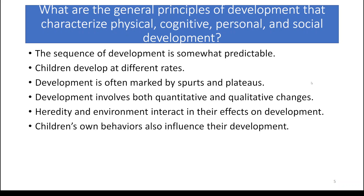Things you need to know about development — human development and learning development in general. The sequence of development is somewhat predictable. The stages you go through in developing and learning as a human being are fairly predictable; we sort of know what order those things are going to come in. But keep in mind that children develop at different rates. If one kid is trying to walk at six months but another one is still crawling, that doesn't necessarily mean there's anything wrong. At a certain point, we look at developmental delays and think there might be a problem, but there is some difference in the development of children and when they start learning to do things. Some of that is normal.